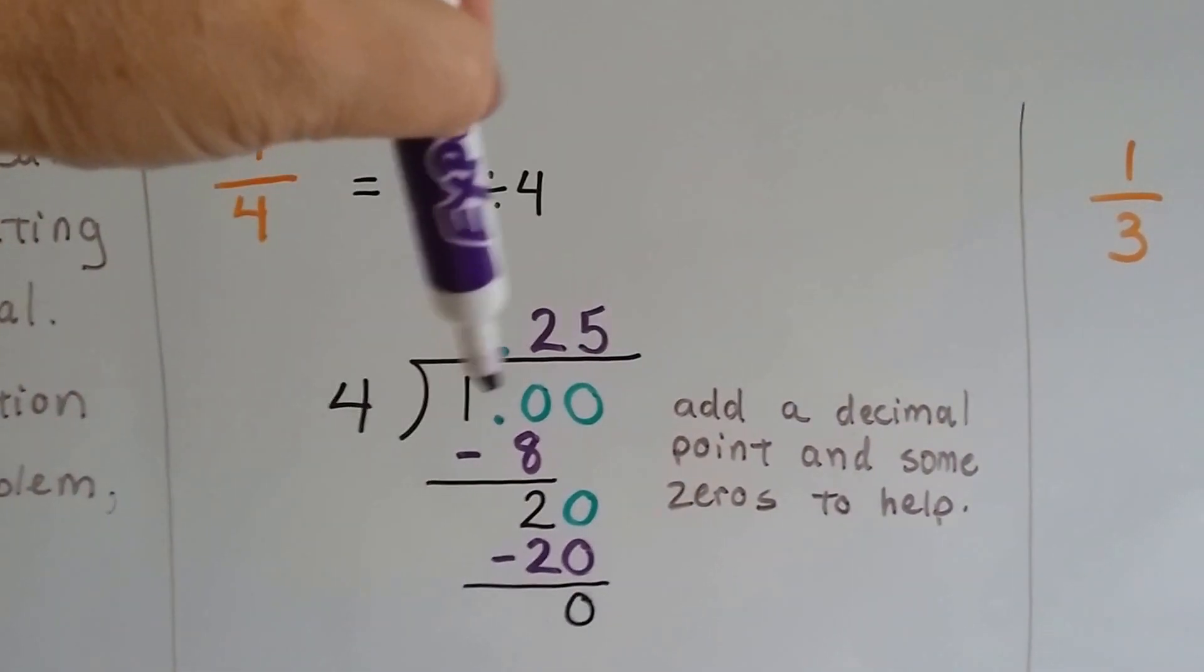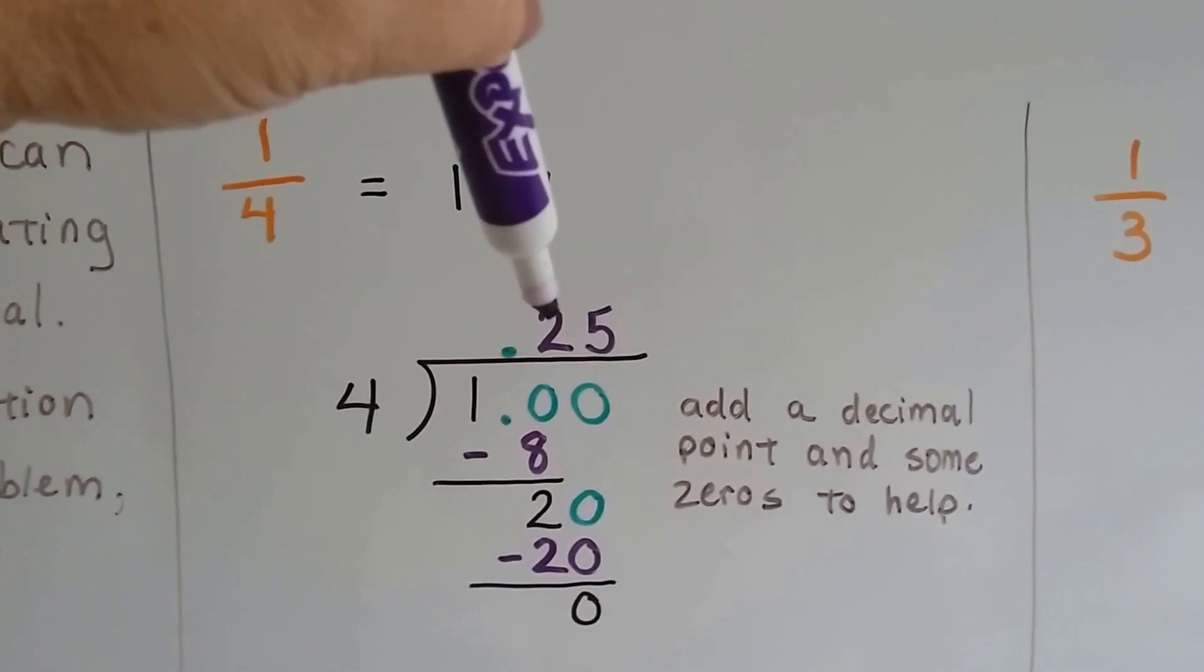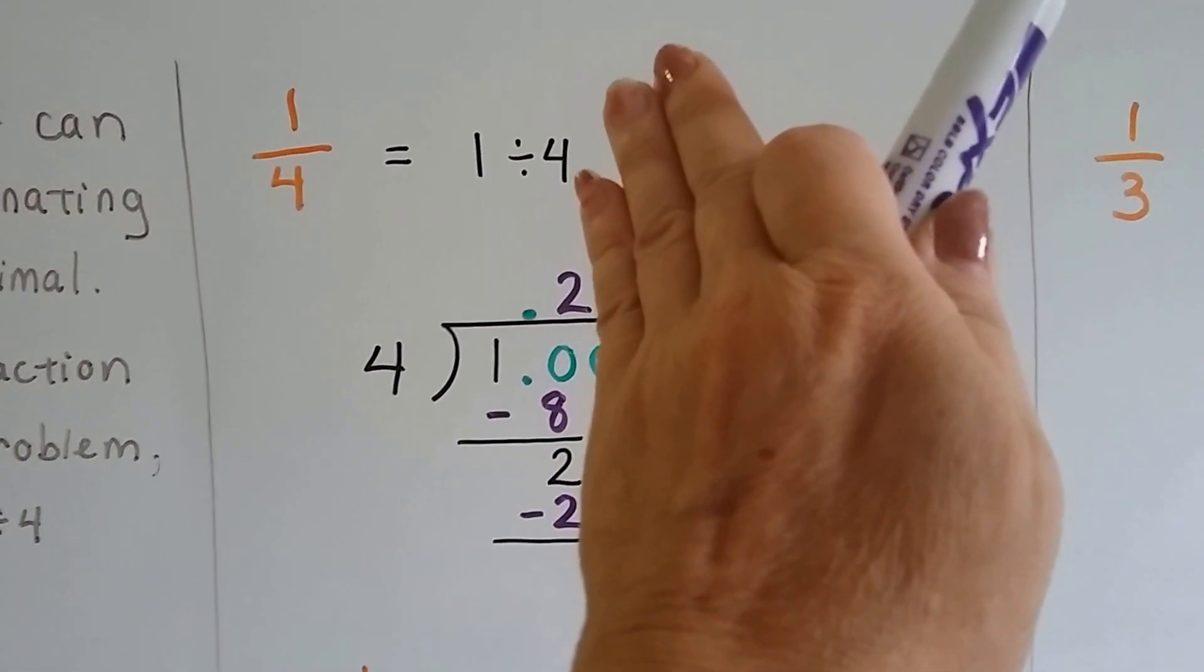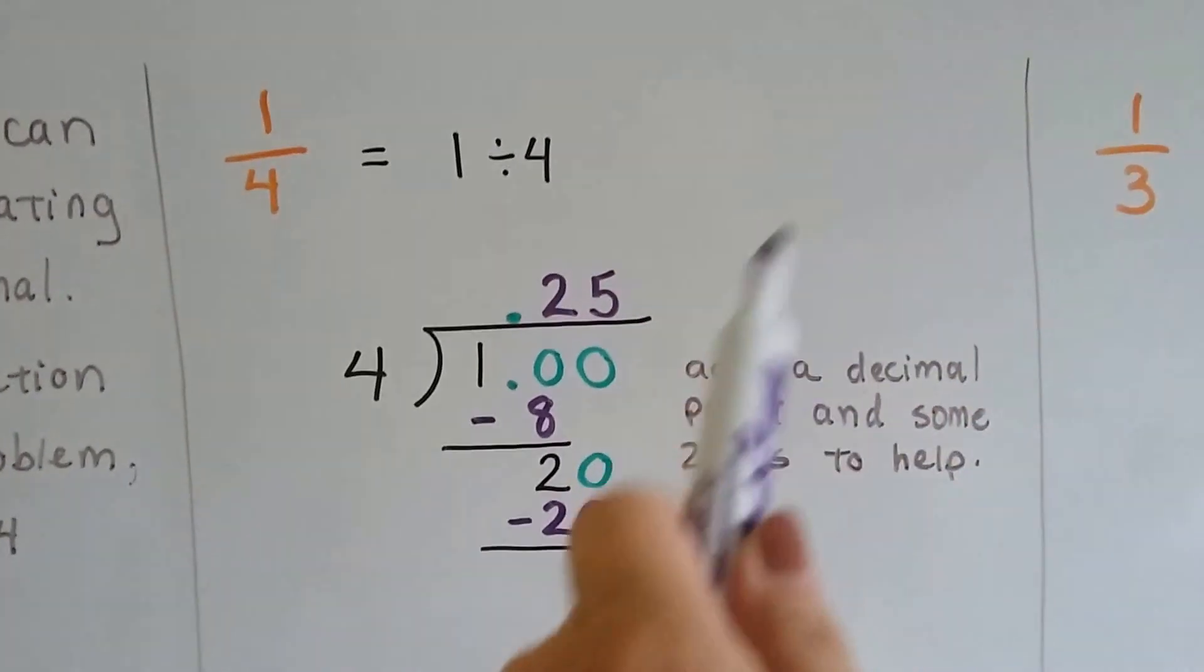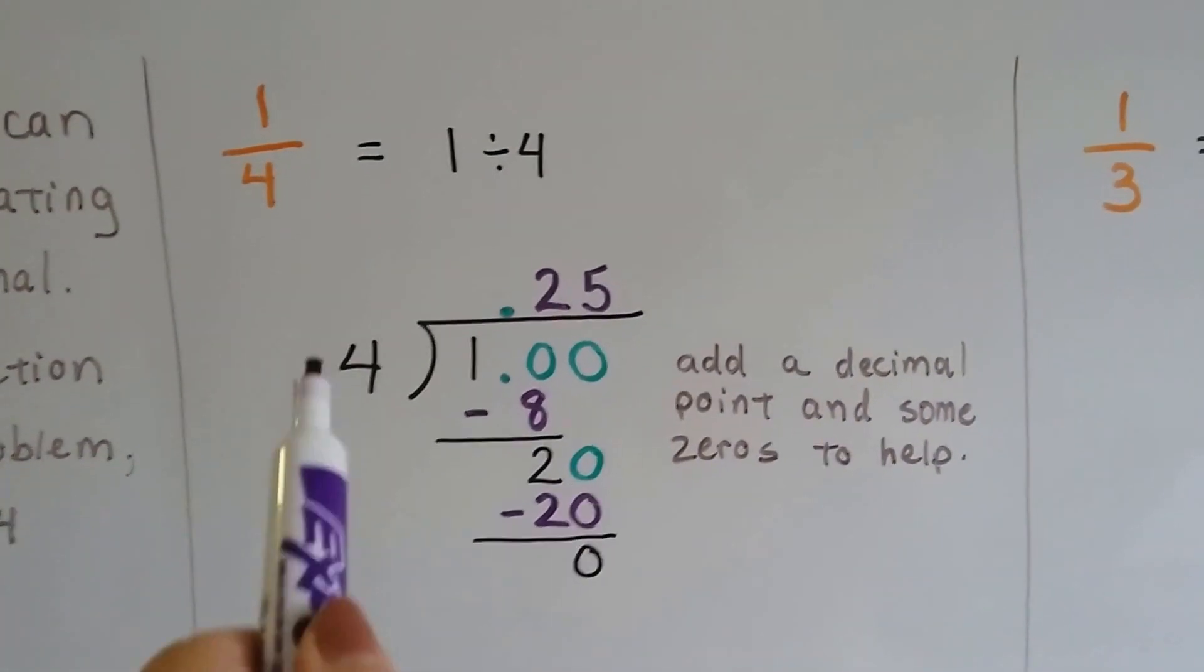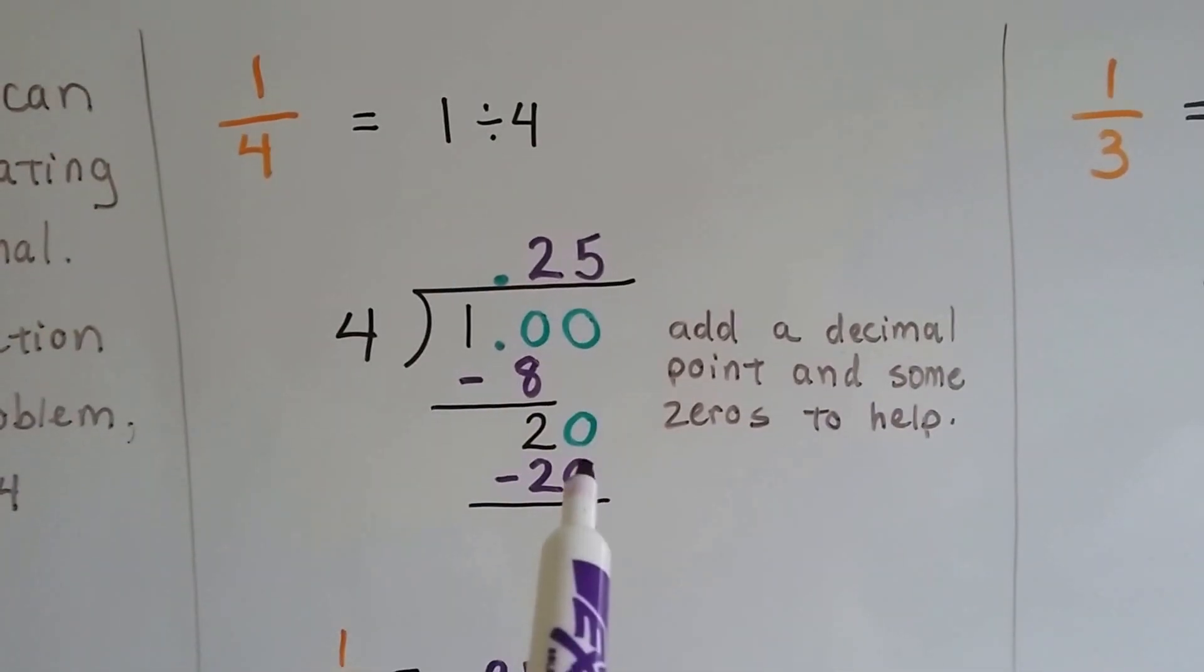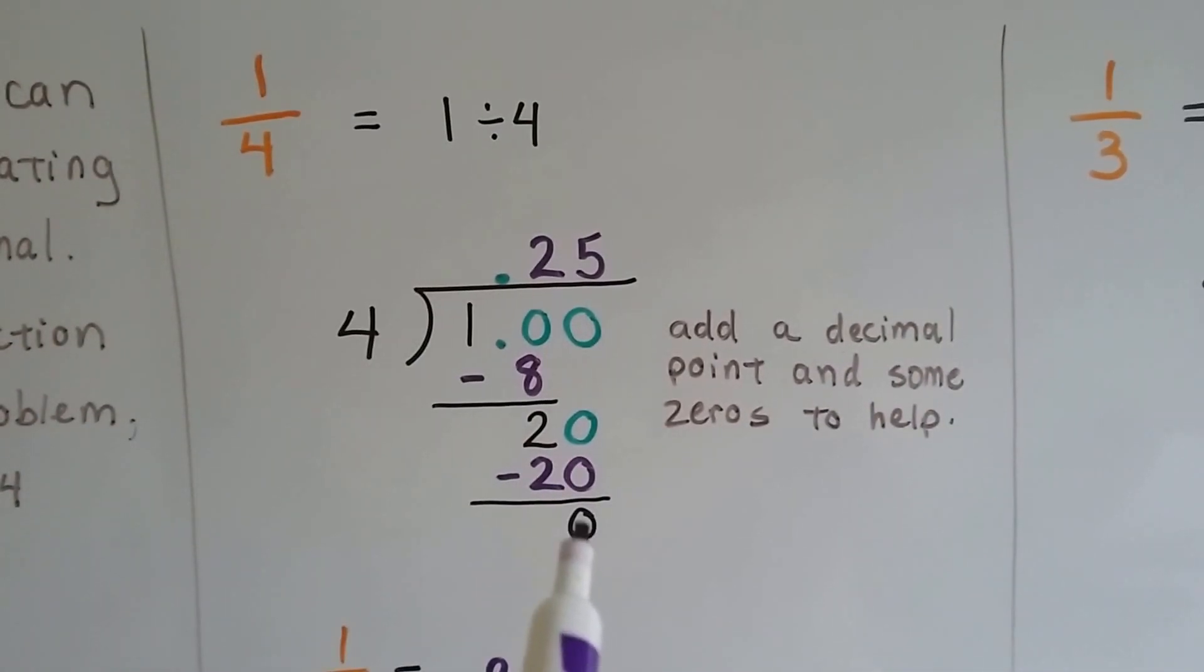4 can go into 10 two times. 4 times 2 is 8. We subtract the 8 from that 10. We get 2 left over, and we drop this 0. 4 goes into 20 five times. It goes over the 0 that we dropped, and 20 take away 20 is 0.